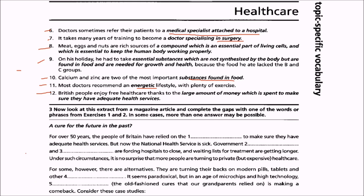We come to our third part. This is an extract from a magazine article and we need to complete the gaps in the blanks with one of the words or phrases we have already covered in exercises one and two. In certain cases more than one answer may be possible. The article is called 'A Cure for the Future'. For 50 years the people of Britain have relied on the welfare state to make sure they have adequate health services, but now the national health service is sick.